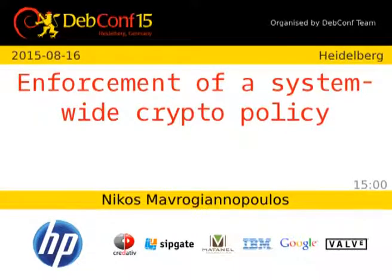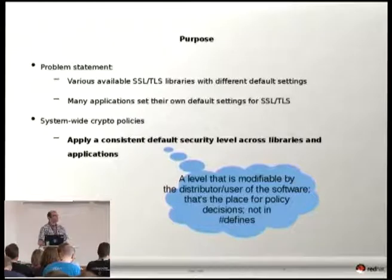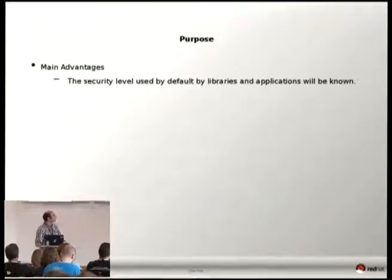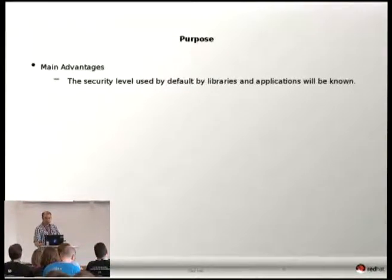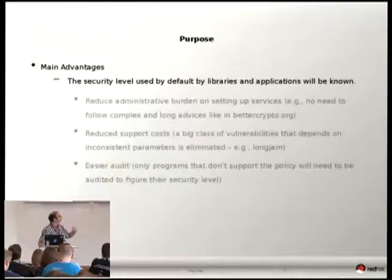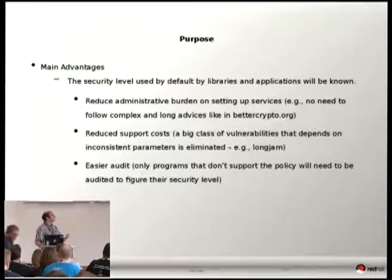The distributor or the user of the software didn't really want to put this policy in the source code. We didn't want to modify any source code to modify the policy. So what would be the main advantage? The main advantage is that you actually know what security level your operating system is using in general. And because I had to convince my boss, I wrote some reasons why we actually need that, and I believe they're also applicable to Debian as a project why we need system-wide crypto policies.